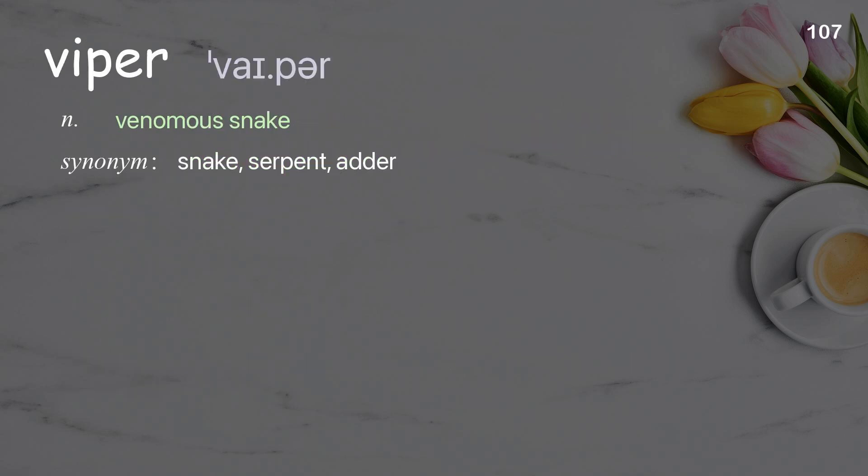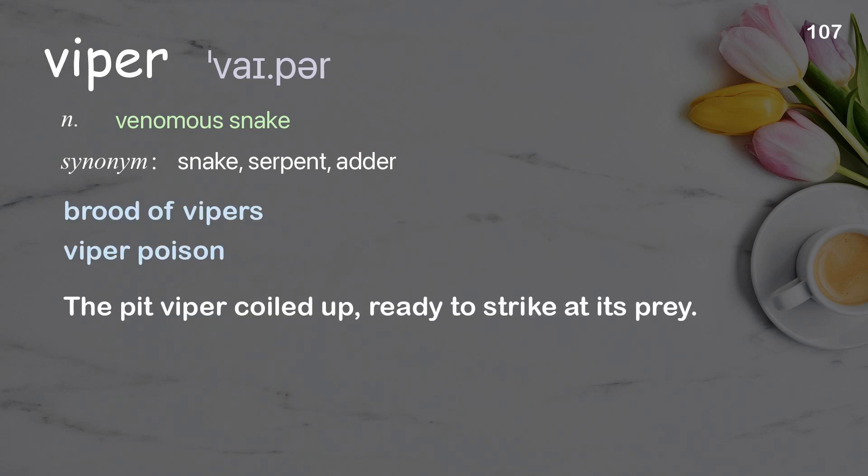Viper: a venomous snake. Examples: brood of vipers, viper poison. The pit viper, coiled up, ready to strike at its prey.